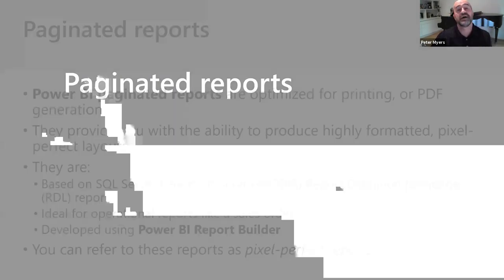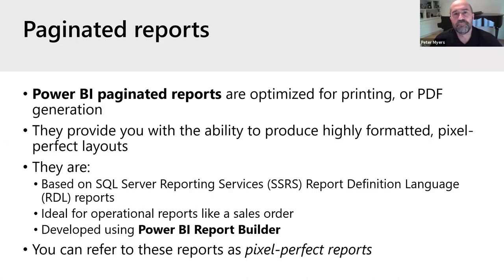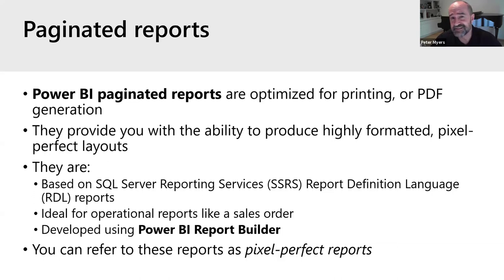Paginated reports are reports available in Power BI optimized for printing or PDF generation. The word 'paginated' is a strong clue — the report is optimized for formatting to a page and potentially multiple pages. They provide highly formatted, pixel-perfect layout. If you have background with SQL Server Reporting Services, first delivered with SQL Server 2000 in 2004, paginated reports in Power BI are really the evolution beyond that.